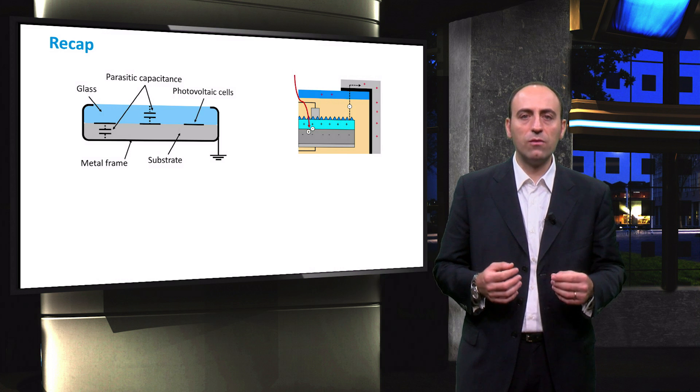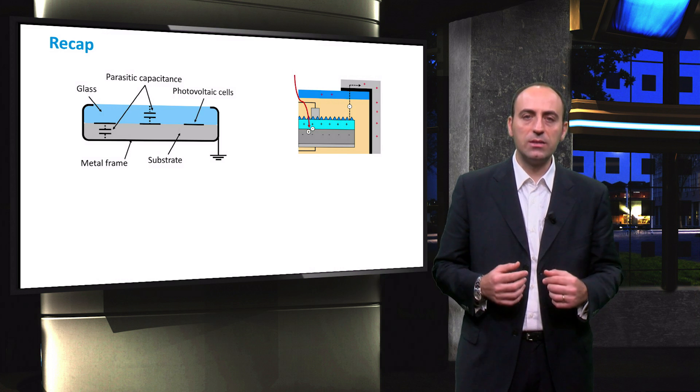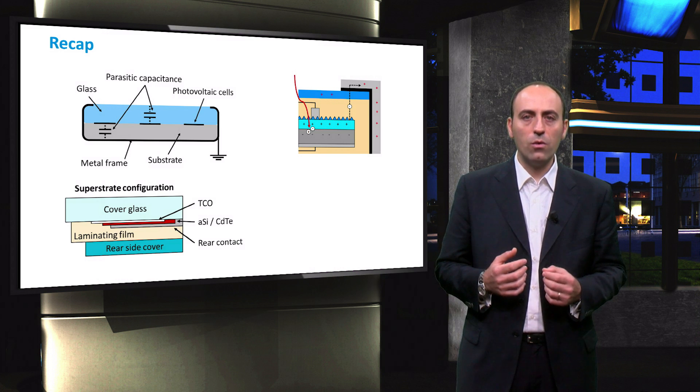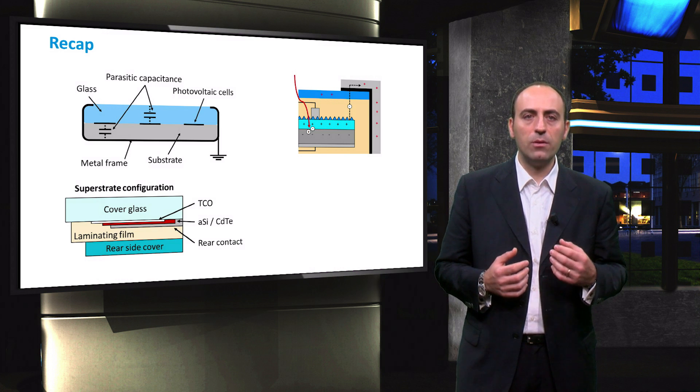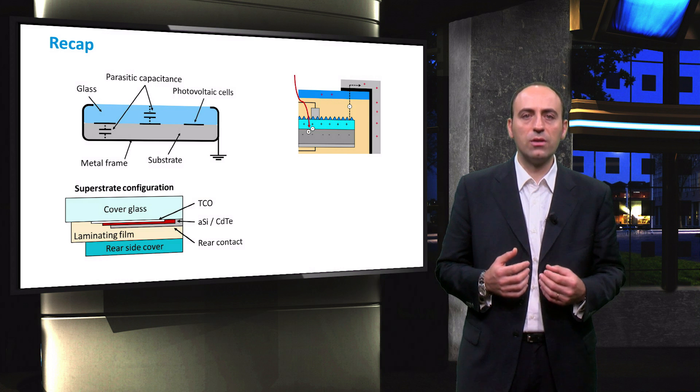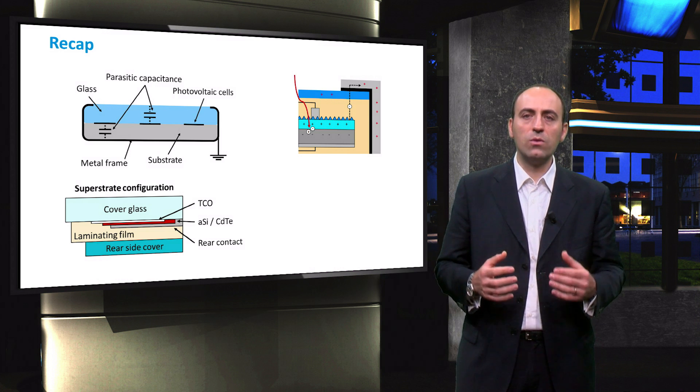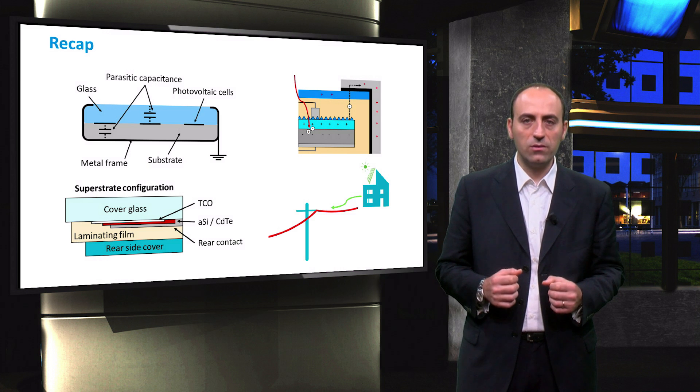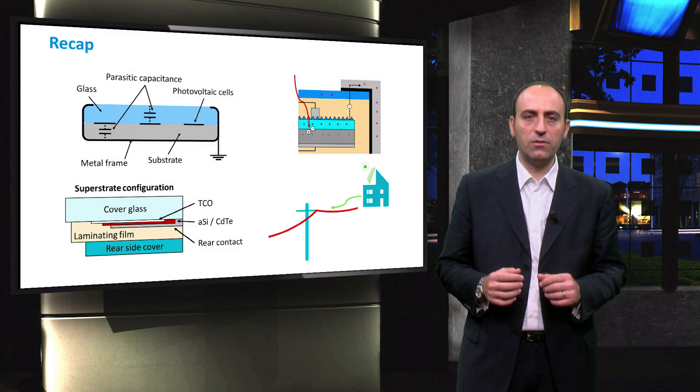This causes a current to flow towards the frame, which results in considerable losses. TCO corrosion regards mainly thin film modules and leads to a reduction in the module's performance. Lastly, we saw that no grid detection is a required feature for grid connected inverters in order to avoid safety issues.